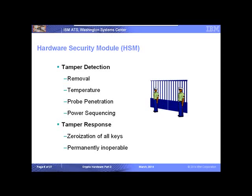Power sequence fluctuations are also monitored — certain attacks can be mounted by manipulating voltage, so if that's detected the card is wiped. When a tamper is detected, the card first zeroizes the registers where master keys are stored, rendering them unreadable. The card becomes permanently inoperable once a tamper response is made. All of this meets FIPS 140-2 Level 4 requirements, the highest level of security for a cryptographic module.